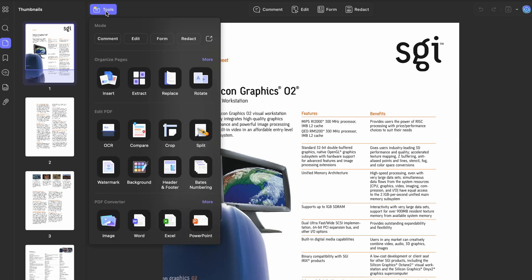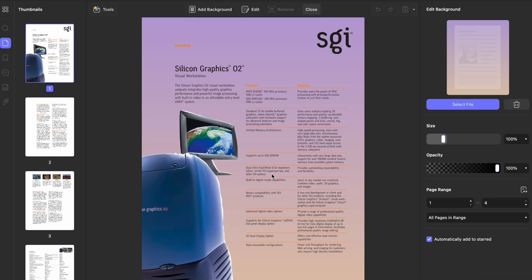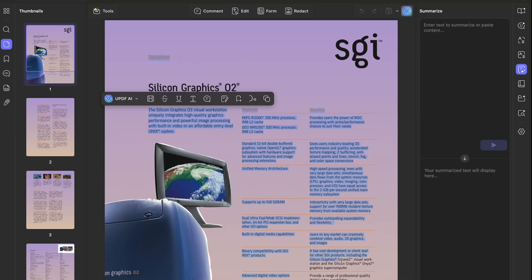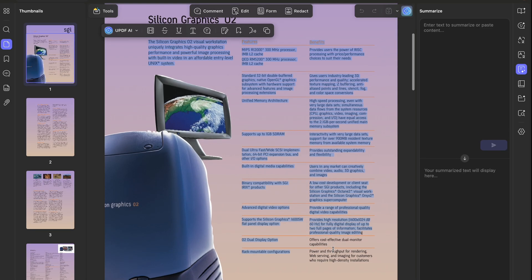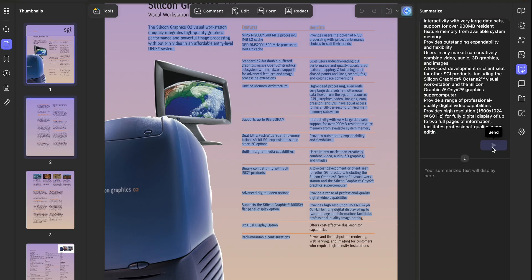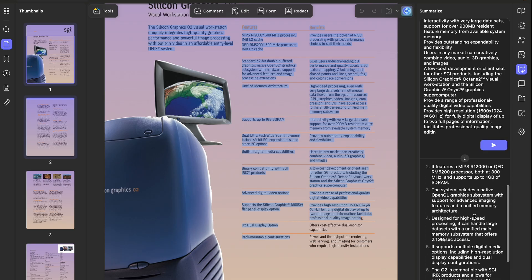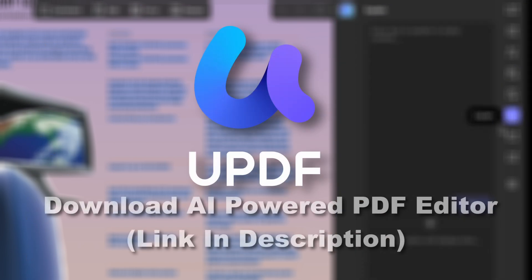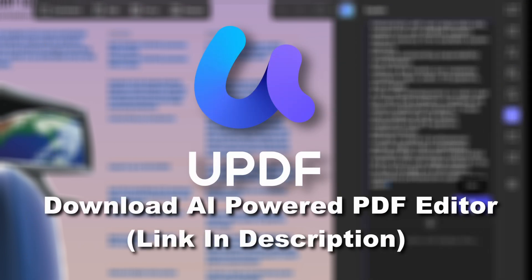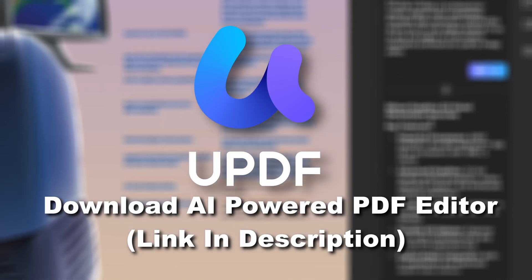You can also use UPDF to edit the PDF itself, like changing already written text or changing the background, among many other features. You can also summarize a specific part of the PDF by simply highlighting the text content and copying it into a special summary tab, and it will give you an intelligent and detailed summary. Check out UPDF today with the first link in the description and see how AI can supercharge your workflow.